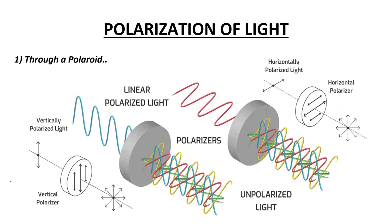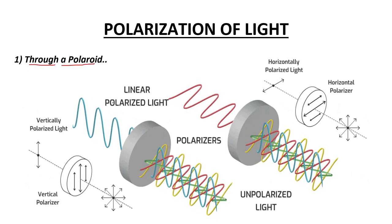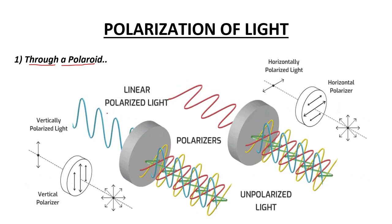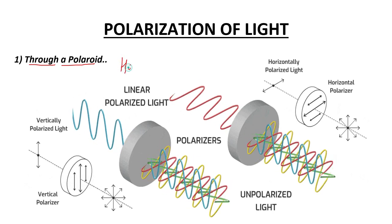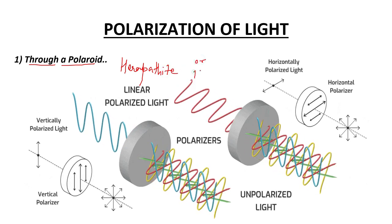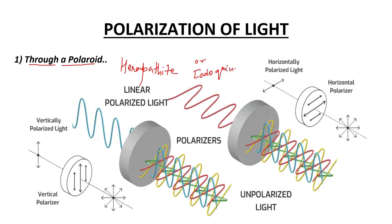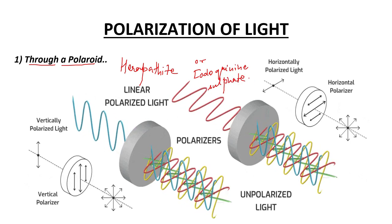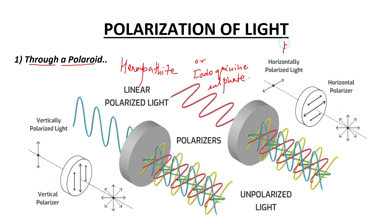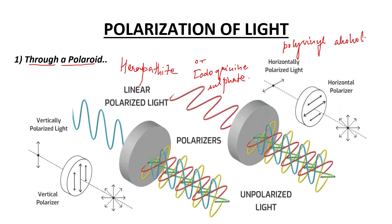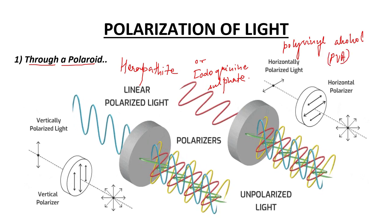The first method is through a Polaroid. A Polaroid is a type of synthetic plastic sheet used to polarize the light. The first Polaroid was made from the crystals of a compound called Herapathite, or chemically Iodoquinine Sulphate. Recently, Polyvinyl Alcohol (PVA) is used for this purpose.